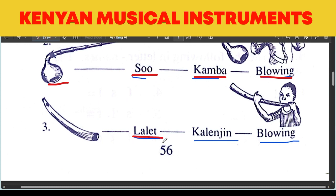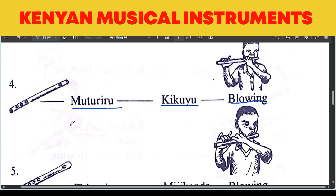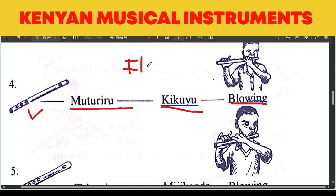Then we have Lalit from the Karangin, played by blowing. This is the horn again — also a horn under the wind musical instruments. Let's look at Motoriro from the Kikuyu. This is the Motoriro from the Kikuyu people, played by blowing. This is a flute — a transverse type of flute.